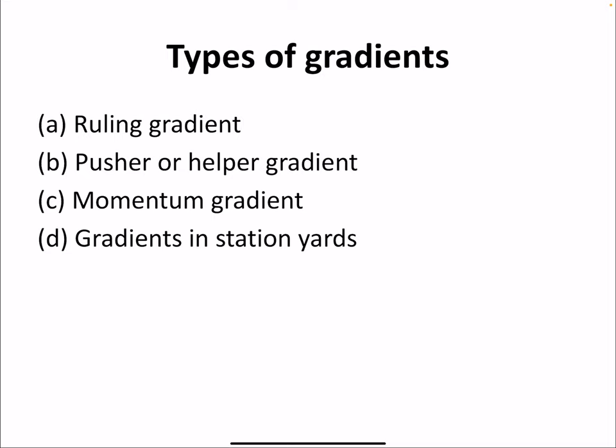There are four different types of gradient: ruling gradient, pusher or helper gradient, momentum gradient, and gradients in stations and yards. We will see them one by one.